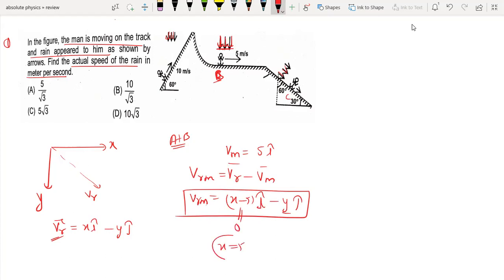The man's speed is 5, so the rain's x component is 5. We can say that the x component is 5. Now let's go to the next track.